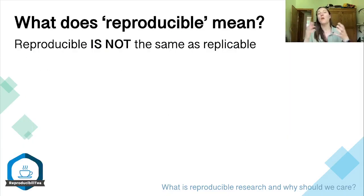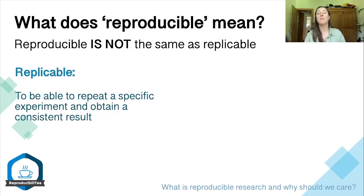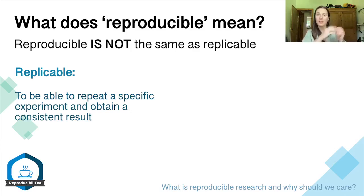So what does the term reproducible actually mean? Reproducible is not the same as replicable. Replicable research means that you're able to repeat a scientific experiment and obtain a similar result with a different data set. This specifically refers to the clarity of the methods and the fact that you can gain the same result in a different data set — so that's specifically methodology based.